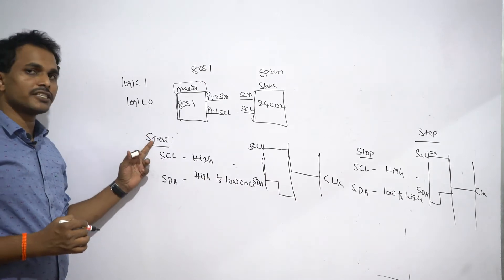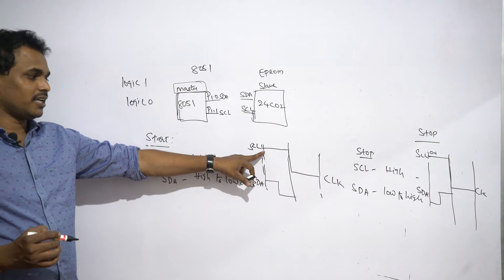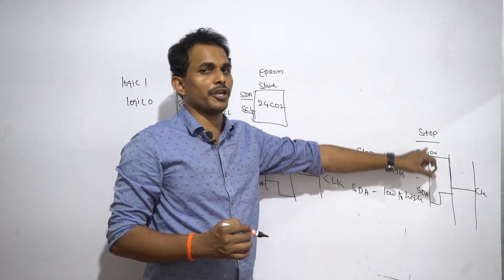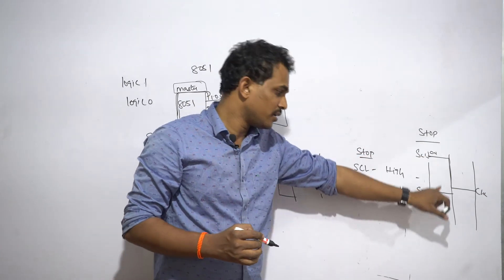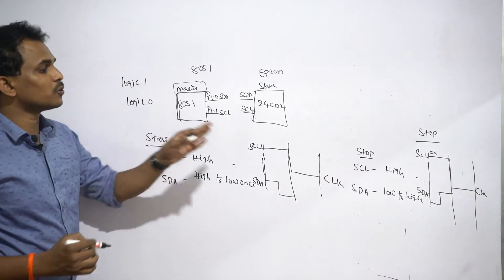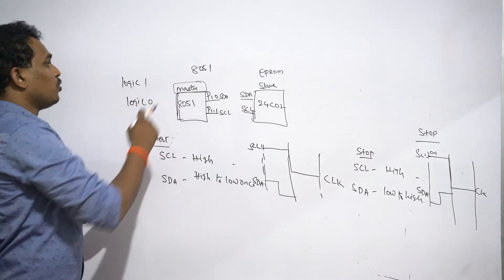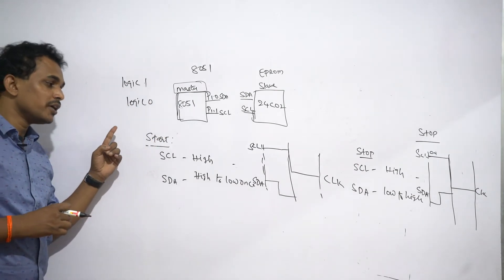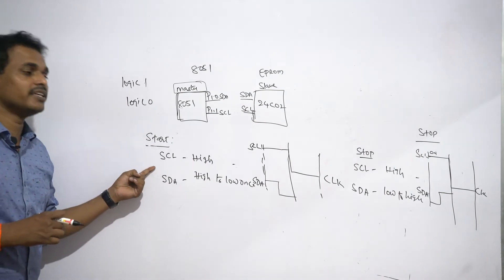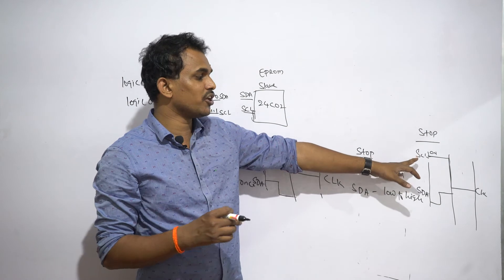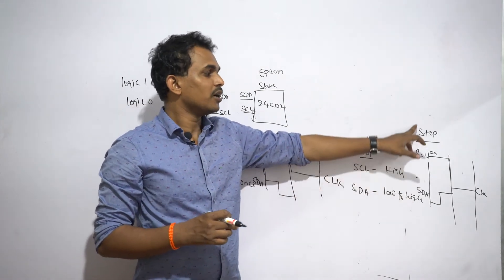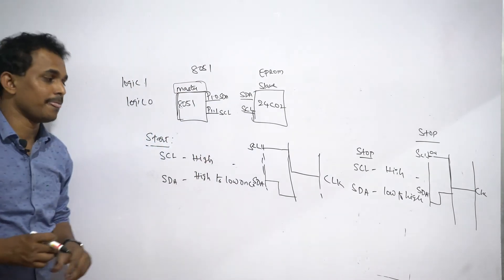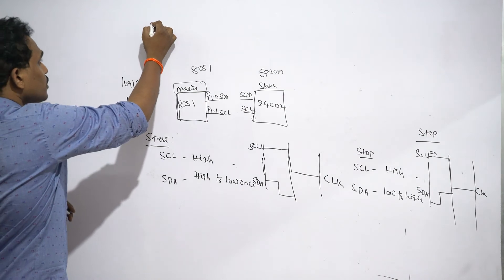To initiate communication, make SCL high and make SDA high to low once. To terminate communication, while SCL is high, make SDA low to high once. These are performed by the master — in this case, 8051. To implement the start condition through program: hold SCL IO pin logic high, then make SDA IO pin logic high to low once. For the stop condition: make SCL high, then make SDA low to high once.